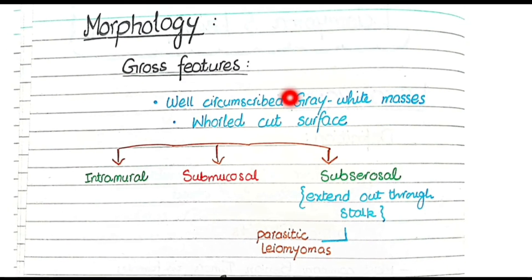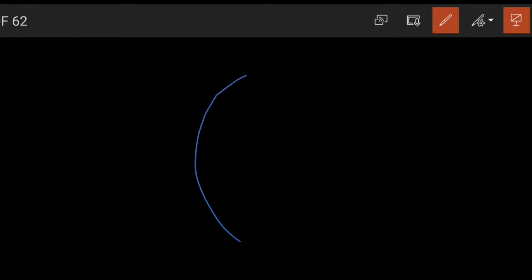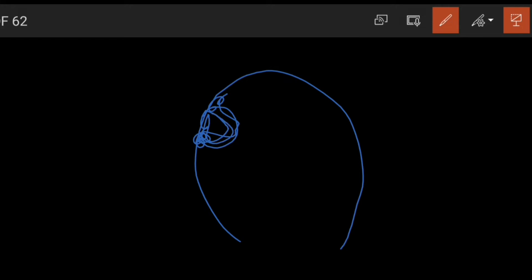Now let's discuss the morphology of leiomyomas. As far as the gross features are concerned, they are well-circumscribed gray-white masses. They are well-circumscribed because they are benign tumors, so they have a clear boundary. They have a whorled cut surface because they are composed of multiple whorls of smooth muscles. There are three types of fibroids: intramural, submucosal, and subserosal. A leiomyoma growing within the wall of the uterus is called intramural; if it extends into the submucosal layer it is called submucosal; and if it extends to the outer serosal layer it is called subserosal.